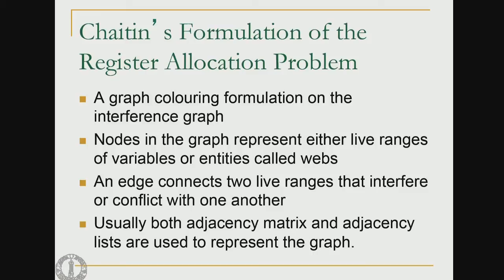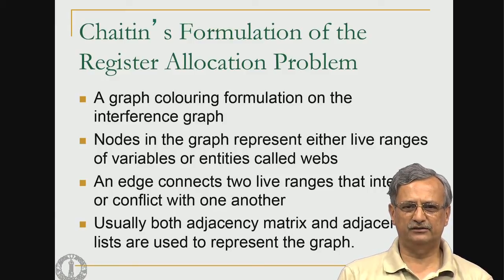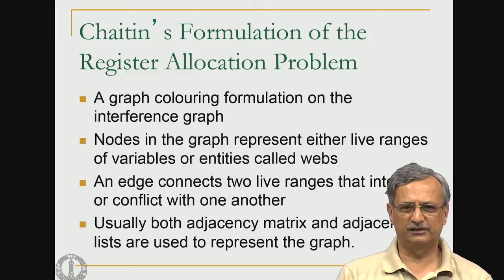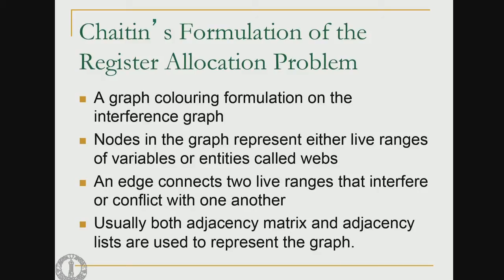In the interference graph we need to specify the nodes and edges. Nodes in the graph are either the live ranges of variables or entities called webs. We know what live ranges are — these are the points at which a particular variable is live, from the definition to the last use of that particular definition. An edge connects two live ranges that interfere or conflict with one another.